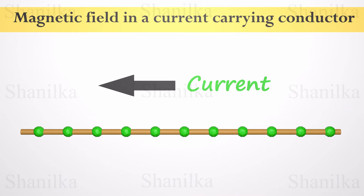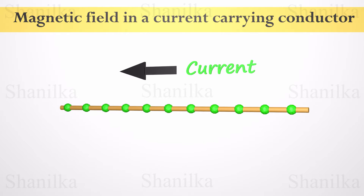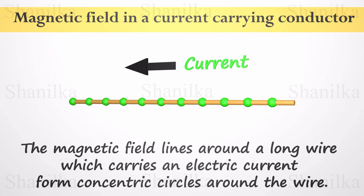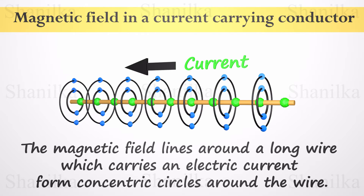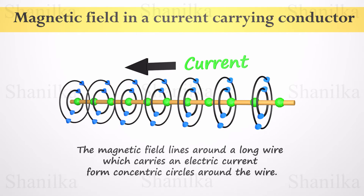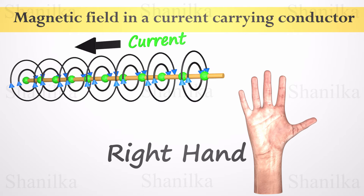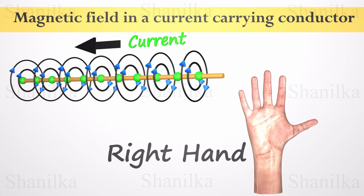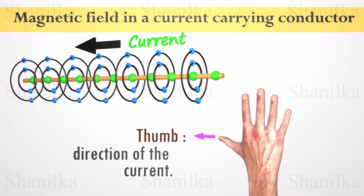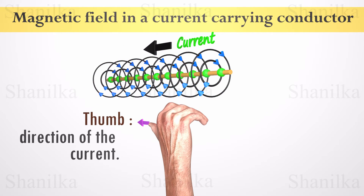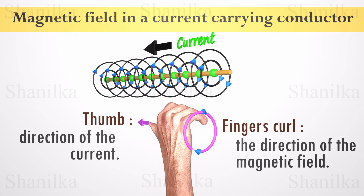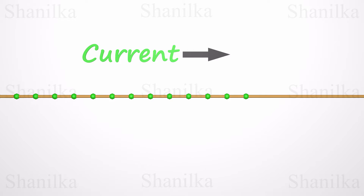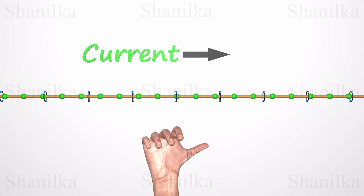For a current-carrying conductor wire, the magnetic field lines around the long wire form concentric circles around the wire, and the direction of the magnetic field is perpendicular to the wire. There is a simple method to find the direction: take your right hand and point the thumb in the direction of the current — the direction your other fingers curl is the direction of the magnetic field. This is the right-hand screw rule.